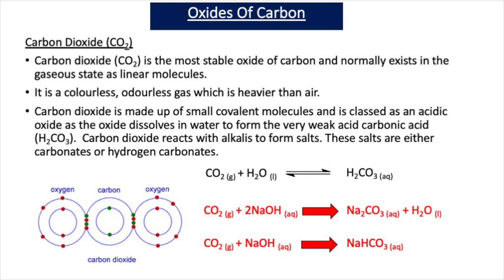Carbon dioxide also reacts with alkalis to form salts — either carbonates or hydrogen carbonates. For example, if carbon dioxide reacts with sodium hydroxide, we could form sodium carbonate and water: CO2 + 2NaOH → Na2CO3 + H2O. However, depending on the moles of sodium hydroxide present, you could form the hydrogen carbonate: CO2 + NaOH → NaHCO3, sodium hydrogen carbonate.